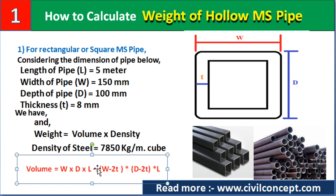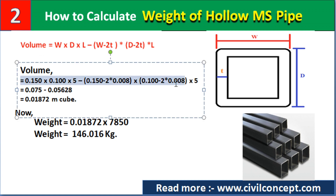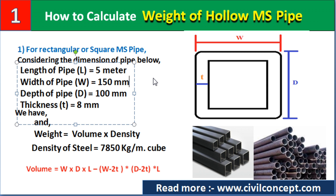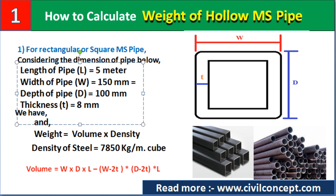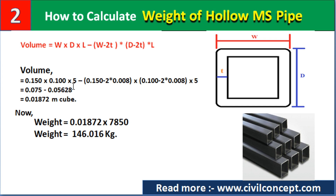This formula calculates the volume of rectangular or square MS pipe. The dimensions are given in mm but we must convert to meters since length is in meters. So: 150 mm = 0.150 m, 100 mm = 0.100 m, and 8 mm = 0.008 m. Now all values are converted to meters and we can substitute into the volume formula.